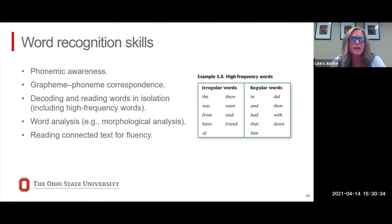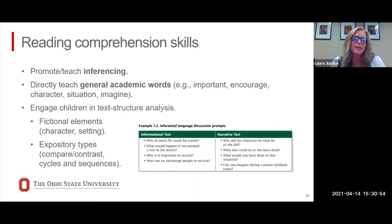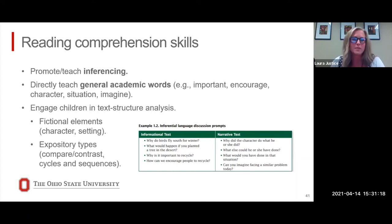The typical tier two intervention gives significant attention to foundational reading skills like phonemic awareness, grapheme-phoneme correspondence, decoding, and reading connected texts for fluency. However, we have to be really cautious about the temptation to ignore reading comprehension, which we often see in tier two sessions. A lot of early models had a relentless focus on foundational skills, but when we do that we crowd out attention to really important comprehension skills such as inferencing, teaching more abstract vocabulary words, and engaging in text structure analysis. As Nell mentioned, comprehension must integrate into tier two and have a complementary feel to the more foundational work we're doing.